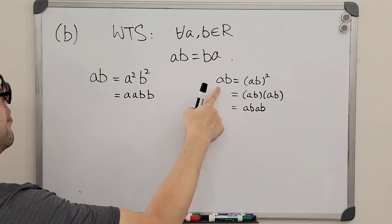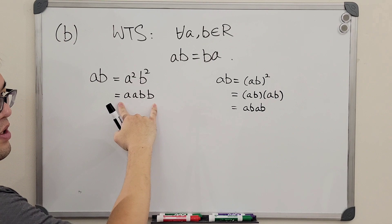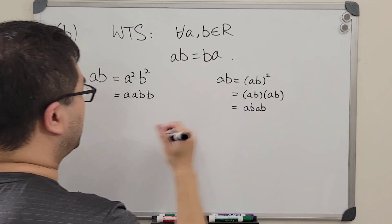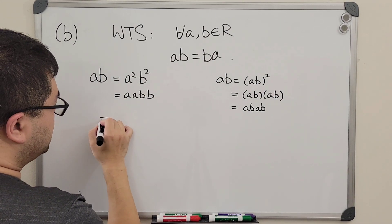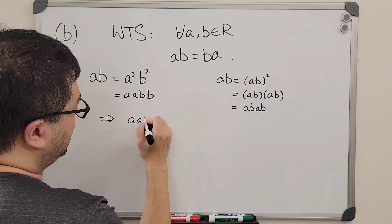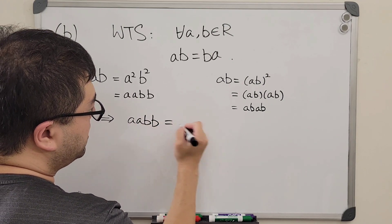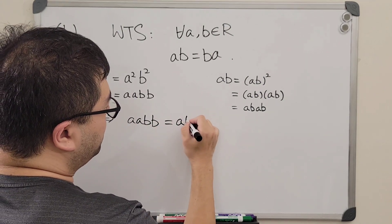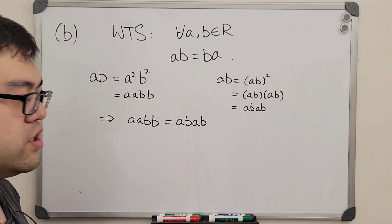now ab is equal to the results on the left as well as the results on the right. So this implies that aabb is actually equal to abab. Then what can we do?